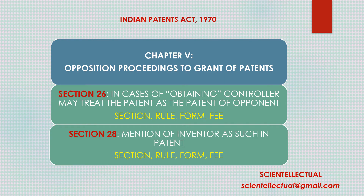Hello, everyone. Welcome to the channel ScienceElectual. In this video, we are covering two more sections under Chapter 5, Indian Patents Act, 1970. Chapter 5 deals with opposition proceedings to grant of patents. The two sections that we are covering in this video are Section 26, In Cases of Obtaining, Controller May Treat the Patent as the Patent of Opponent, and Section 28, Mention of Inventor as Such in Patent.